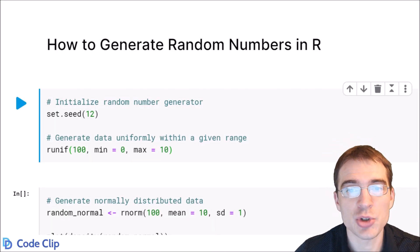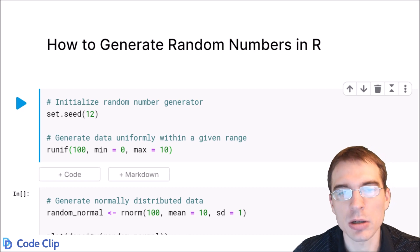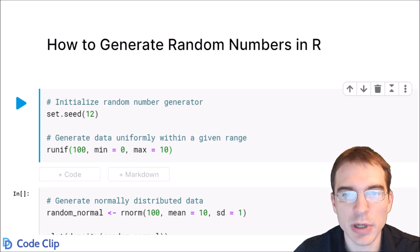In this video we're going to learn how to generate random numbers in R. Now we're just going to start by generating random uniform data, so numbers randomly within a given range.